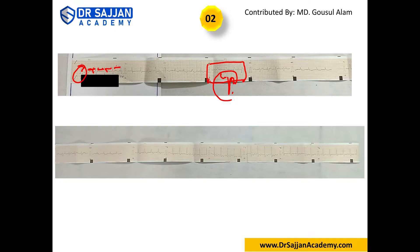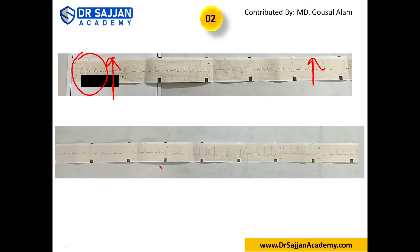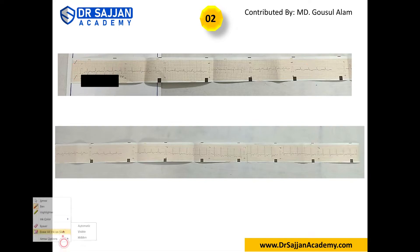Rate: we cannot calculate exactly, but it looks like around four boxes, and three to five boxes is normal, so rate is normal. Axis: in lead one it's going up, and lead AVF it's going up — so the axis is normal.